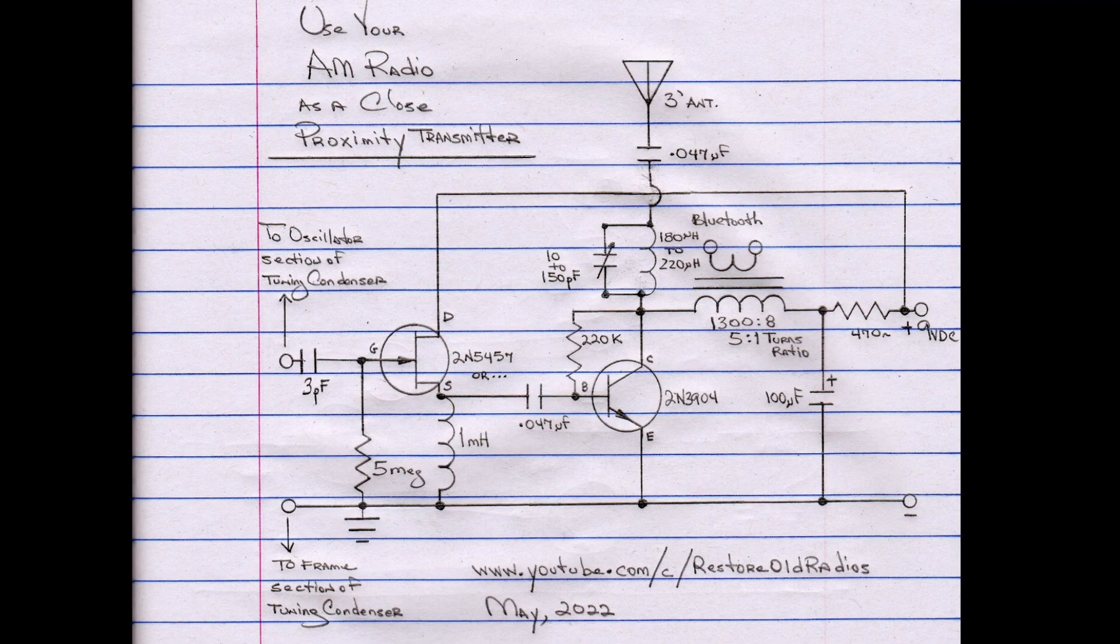If you look at the left side of the circuit, what ties back into the oscillator section there, you can see the gate of the JFET using a very low capacitor value, 3 picofarad. You could just use a gimmick capacitor and that seemed to work well. A 5 meg resistor there from the gate back to the ground and then the 1 millihenry RF choke. Somewhere between 800 microhenrys and 1 millihenry seemed to work best.